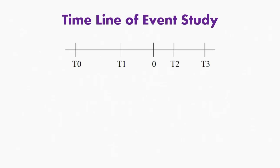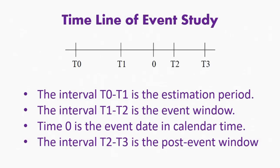We categorize time into different windows — we call it the timeline of the event study. In the image, you can see a timeline from T0 to T3, which represents the entire span of an event study. T0 to T1 is the estimation period, which is the time prior to a particular event. T1 to T2 is the event window, where the particular event is also included. The point '0' in the image is the actual event day.